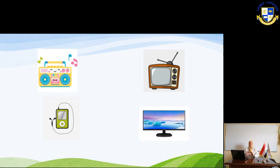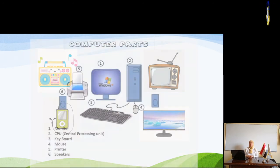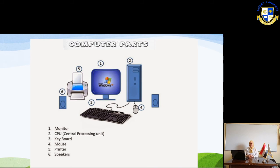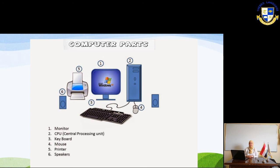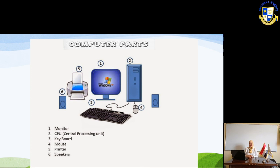In the next slide you will see the computer parts. We have six parts: number one is the monitor or screen, number two is the CPU — the Central Processing Unit, number three is the keyboard, number four is the mouse, number five is the printer, and number six is the speakers.